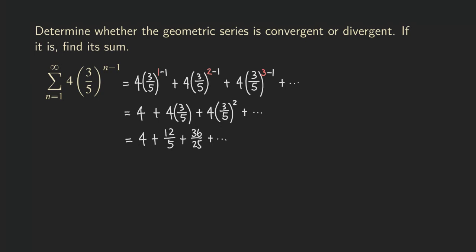So now this geometric series — as you can see from this form right here — the common ratio is going to be three over five. Because if we go from the first term to the second term, we multiply by three fifths to get the second term, and we multiply the second term by three fifths to get the third term. So the common ratio r equals three fifths.